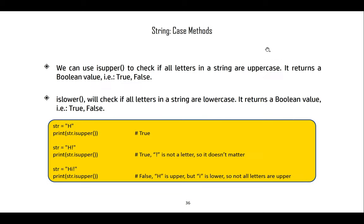In strings there are also case methods. We can check whether something is all uppercase using is_upper to check if all the letters of a string are uppercase. It returns true or false boolean values. is_lower checks if all the letters in a string are lowercase, also returning true or false. That can be very handy.